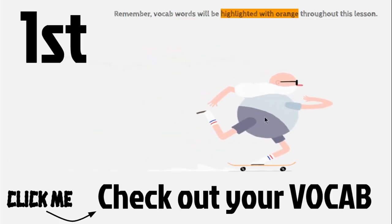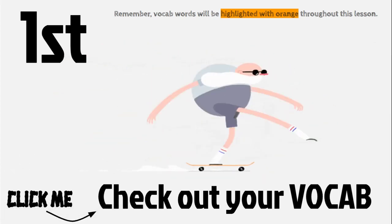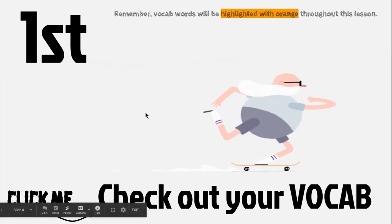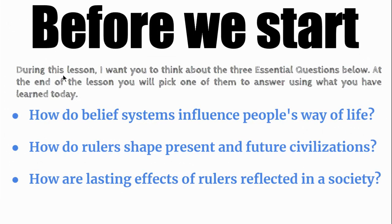If you want to check out your vocabulary for this part of the lesson, click here and that will take you to a vocabulary list that you can study. As we go along, think about these three questions: How do belief systems influence people's ways of life? How do rulers shape present and future civilizations? How are lasting effects of rulers reflected in a society?